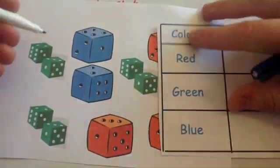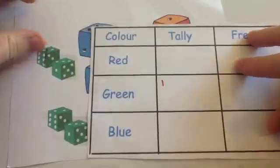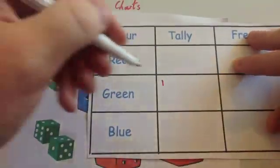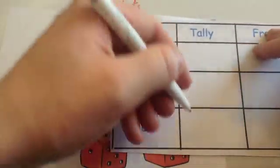the first one is green. So I go to the green and I put a tally like so. Next, another green, so I cross it off and I do another tally. Next one, blue. Cross it off and put blue.